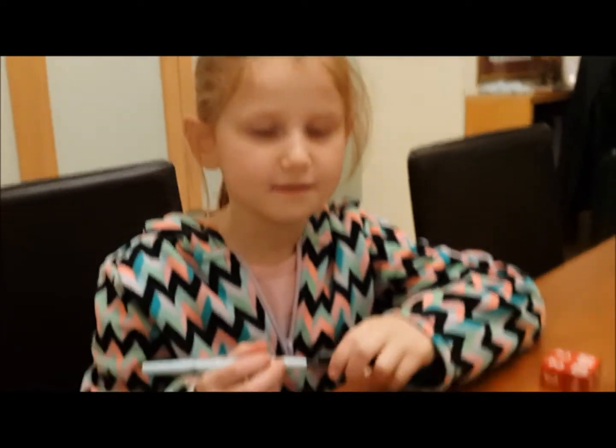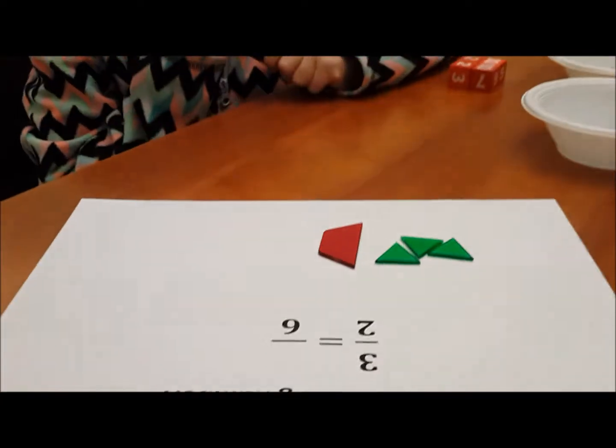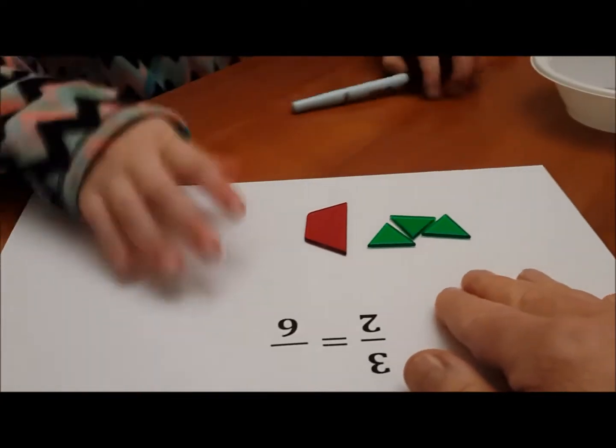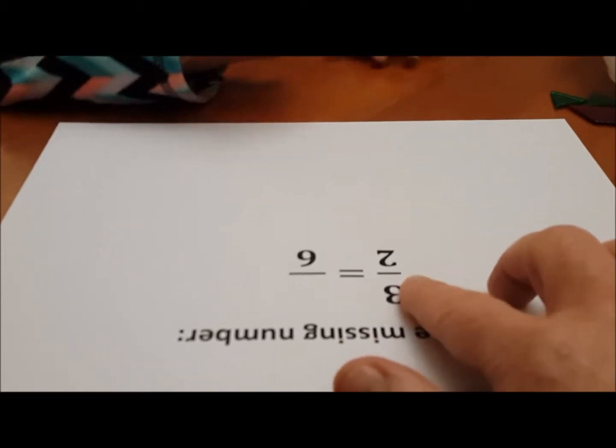Okay, very good. So now let's move the blocks and let's look at the paper underneath. Remove those blocks please from the scale. Okay, this time we have three halves and we want to know how many sixths they are. Would you place three halves for me please?